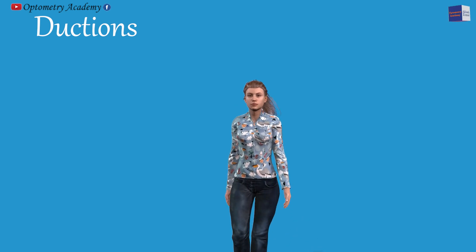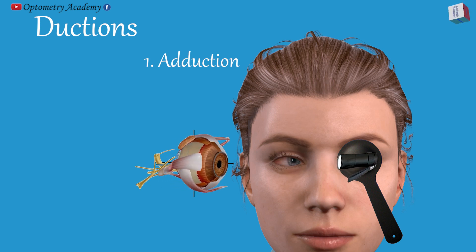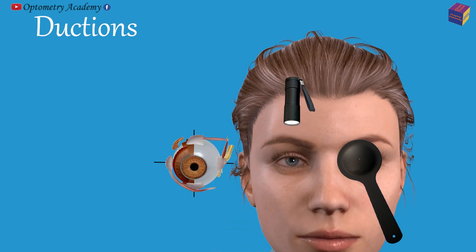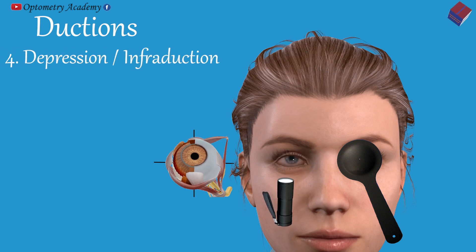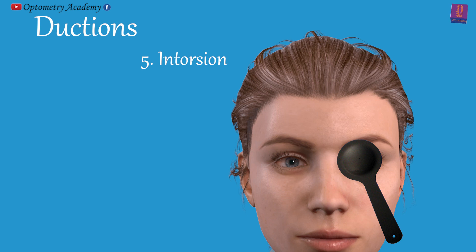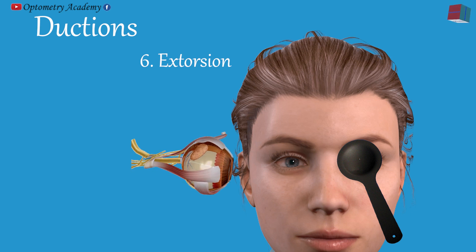We have a 3D subject and we will see all these ocular movements in it. To test ductions, we need to occlude one eye. An inward movement of the eye towards the nose — a medial rotation along the vertical axis — is known as adduction. An outward or lateral rotation along the vertical axis is known as abduction. An upward movement along the horizontal axis is called elevation. When the eye moves down along the horizontal axis, it is termed as depression. When the eye makes a rotatory movement along the anterior-posterior axis such that the superior pole rotates towards the nose, it is known as intorsion. When the eye rotates so that the 12 o'clock point rotates away from the nose, it is termed as extorsion.